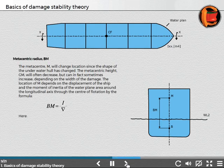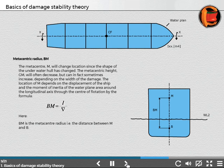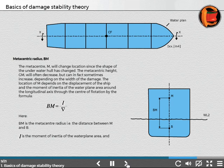Here, BM is the metacentric radius, that is, the distance between M and B. This symbol is the moment of inertia of the waterplane area, and this symbol is the volume of displacement.